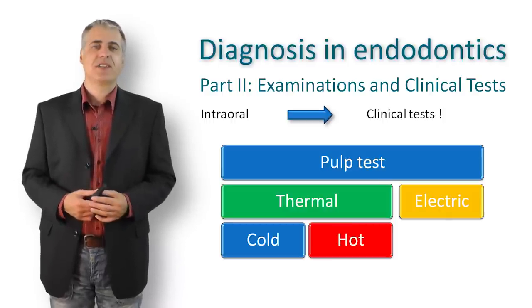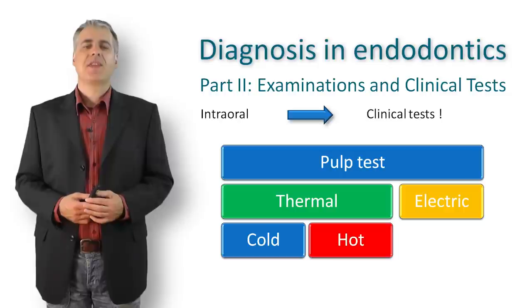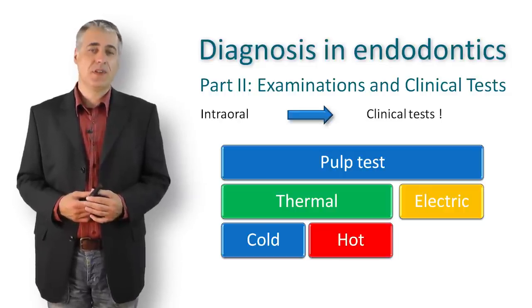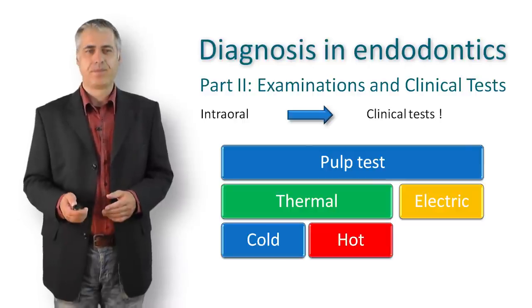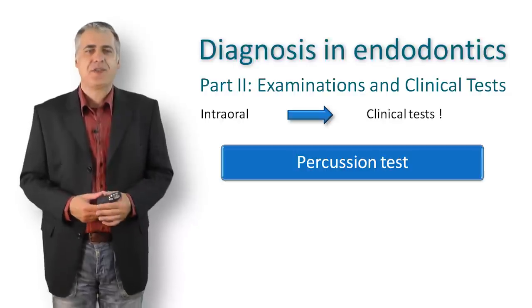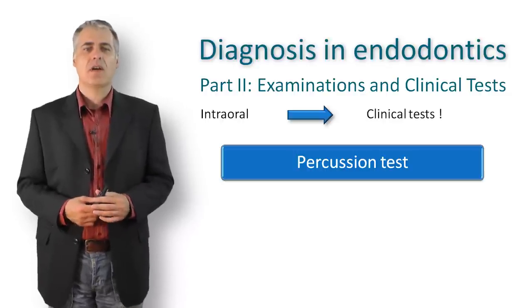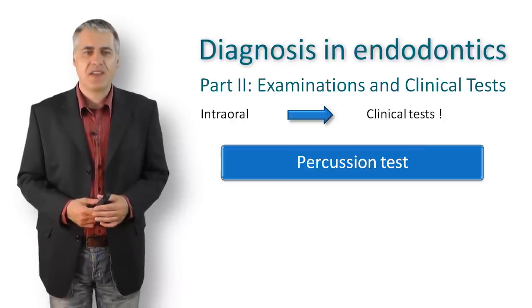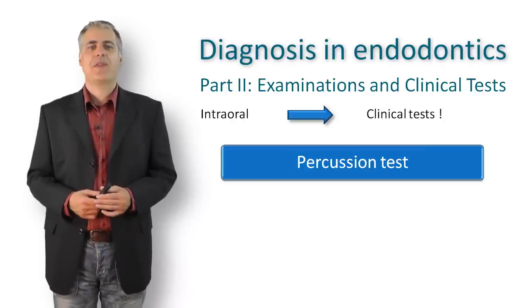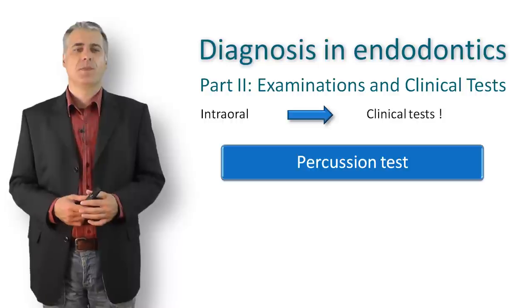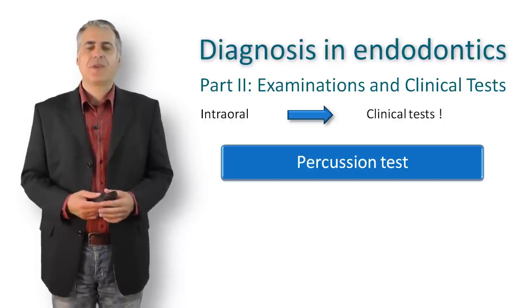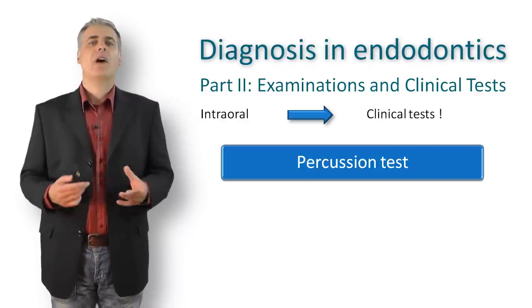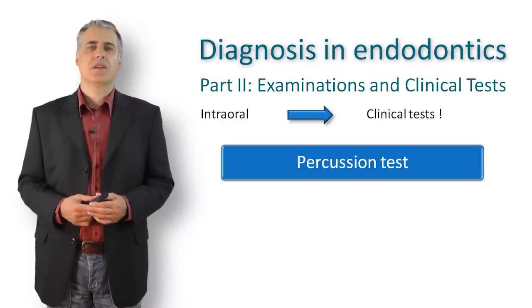Especially when a patient reports pain on chewing or excessive occlusal contact, the percussion test can verify it by tapping with the fingertip or the handle of a mirror on the tooth. Trauma, bruxism, periodontal diseases, a periapical process of endodontic origin, or other reasons can cause a positive percussion test. Similar to the pulp test, you should start with contralateral and adjacent teeth to establish a normal response baseline. The percussion test can be positive even when you see no signs of inflammation on the radiograph.